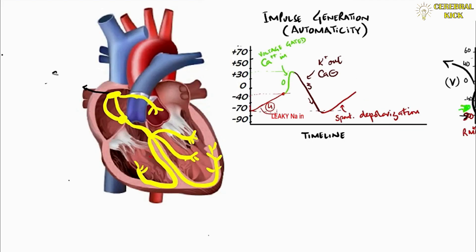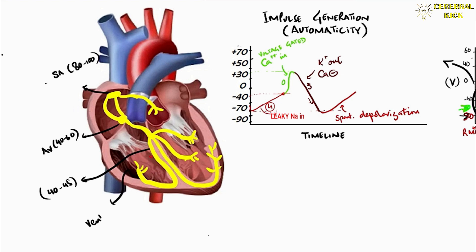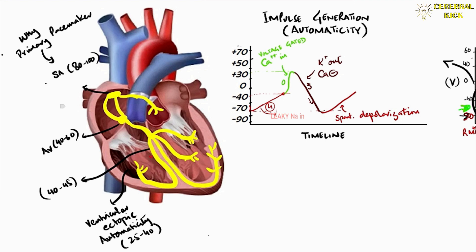There are various focal points in the heart that can generate automaticity. The SA node beats at 80 to 100 beats per minute. The AV node can generate beats at 40 to 60 beats per minute. The bundle branches can generate 40 to 45 beats per minute, while the ventricular mass itself can generate ectopic beats at 25 to 40 beats per minute.